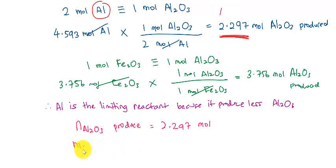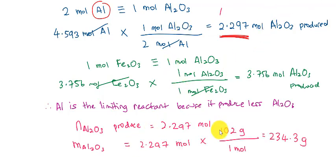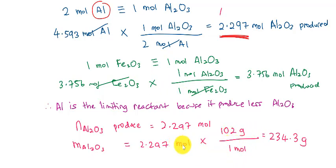Since the question asks to calculate the mass of aluminium oxide produced, we proceed with 2.297 moles. The mass of aluminium oxide produced: using the conversion factor with the molar mass of aluminium oxide given in the question as 102 grams per mole. We place moles in the denominator to cancel it out, so the answer comes out in grams.